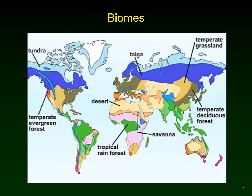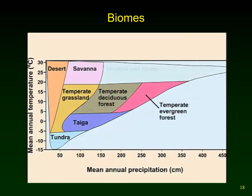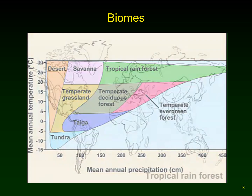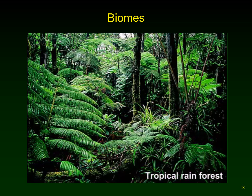Biomes are major communities of organisms with a characteristic appearance, distributed over a wide area defined largely by vegetation and regional variations in climate. The most commonly used terms include tropical rainforest, savannah, desert, temperate grassland, temperate deciduous forest, temperate evergreen forest, taiga, and tundra. Moisture and temperature are key environmental factors determining which biomes are found where. Tropical rainforests receive 140 to 450 centimeters of rain per year and contain at least half of the earth's species of plants and animals. The soil in tropical rainforests is not nutrient rich — most nutrients are held in the plants.